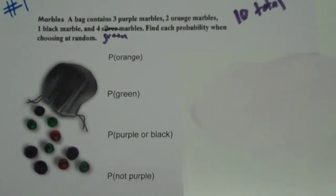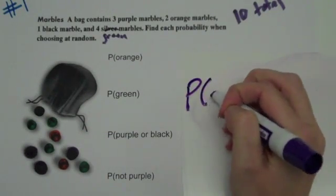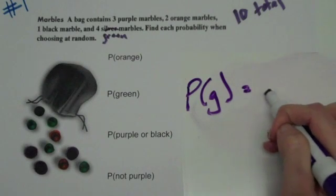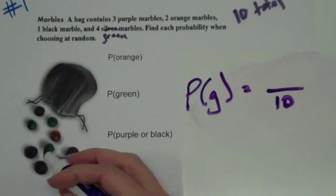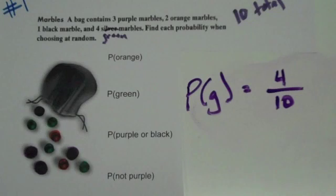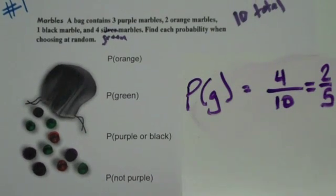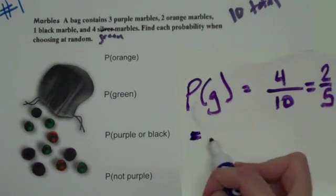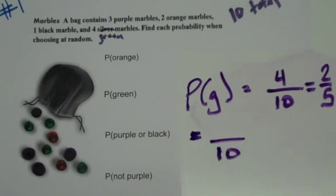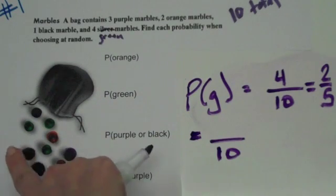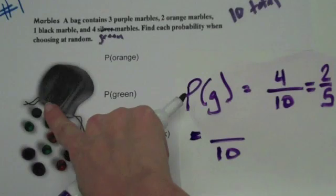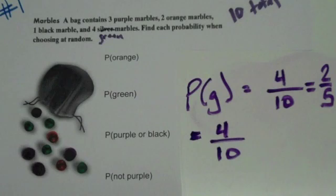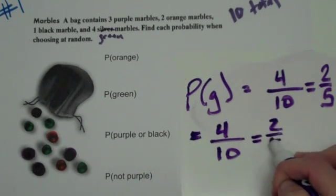Let's go ahead and do green. The probability of getting a green is going to be, again, your total which is ten, and there are four green marbles. So you have a four out of ten chance, which simplifies to two-fifths. The second problem is asking you purple or black, which means you could get one or the other. The probability of that is going to be your total amount which is ten, and purple or black means you can get one or the other — three purples and one black, so there are four total. That gives you four out of ten, which is also two out of five.